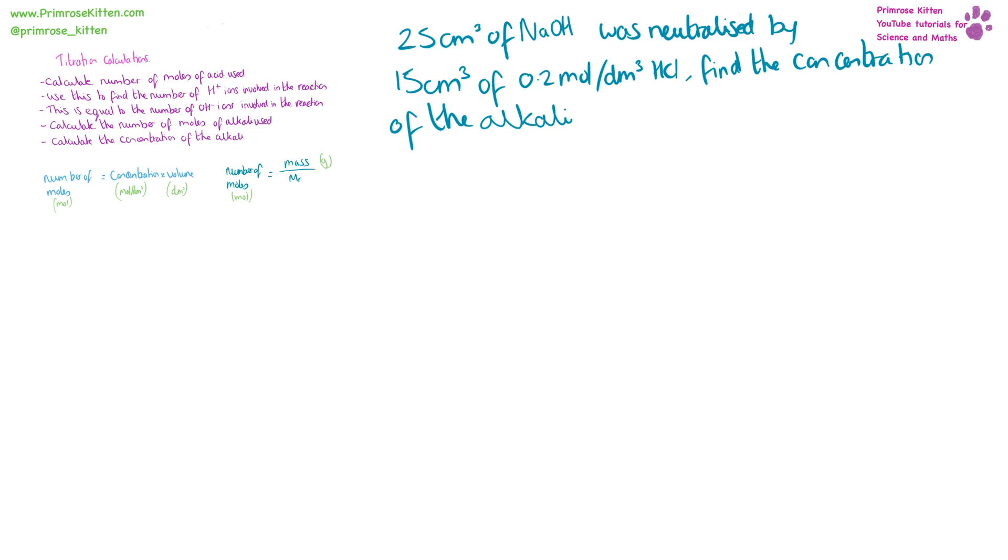We have 25 centimeters cubed of alkali was neutralized by 15 centimeters cubed of 0.2 moles acid. Find the concentration of the alkali. First thing I'm going to do is pull all the information out of the question. Concentration of the alkali is what we're trying to find. Volume of the alkali, 25 centimeters cubed. Concentration of the acid, 0.2 moles per decimeter cubed, volume of the acid, 15 centimeters cubed.